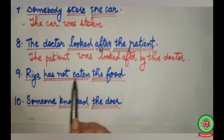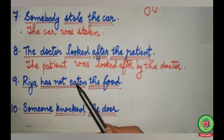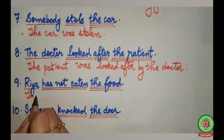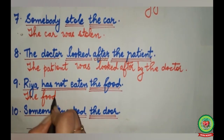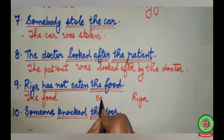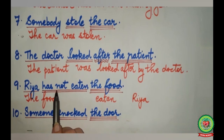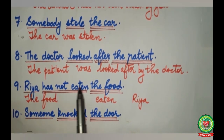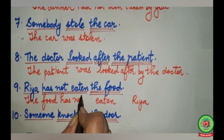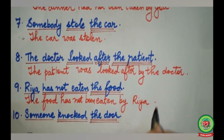Ninth example: Rhea has not eaten the food. Rhea is the subject, has not eaten is the verb, the food is the object. The food will come in the beginning, Rhea will go to the last. Eaten will remain eaten. Has not eaten changes to has not been eaten. The sentence becomes: The food has not been eaten by Rhea.